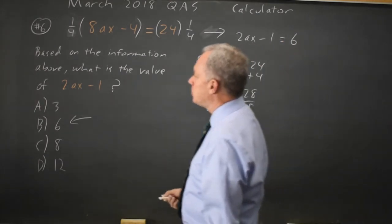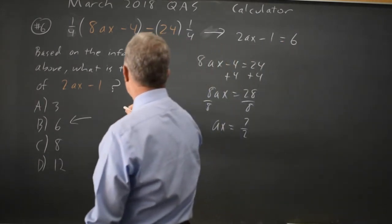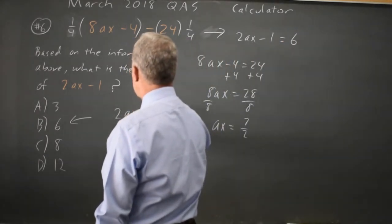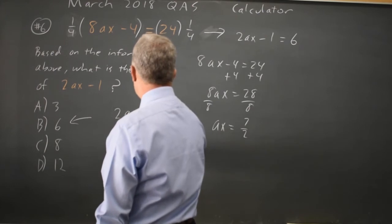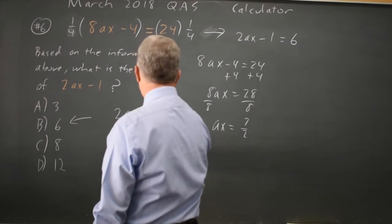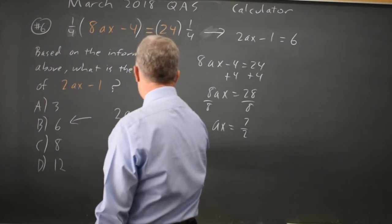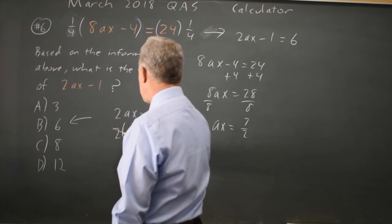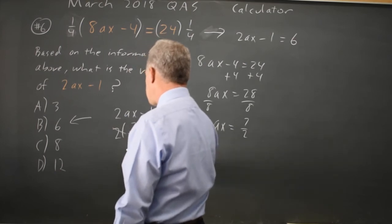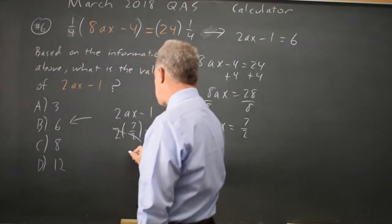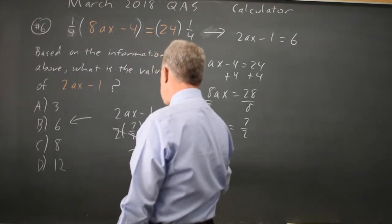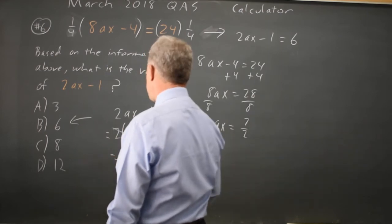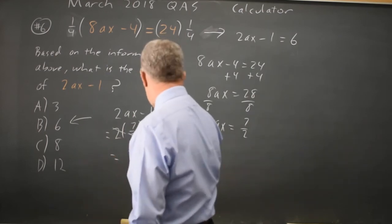And they want 2ax minus 1. 2ax minus 1 is twice ax, which is 7 halves, minus 1. 2 over 2 is 1, so that would be 7 minus 1 equals 6. Again, choice B.